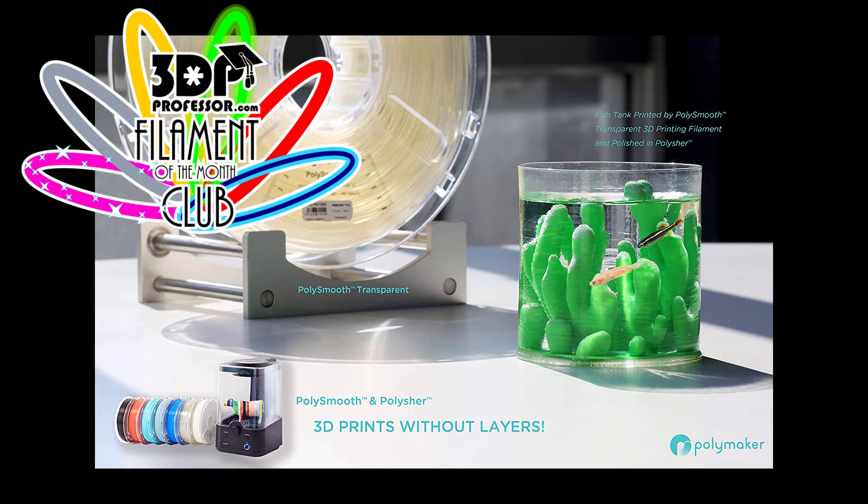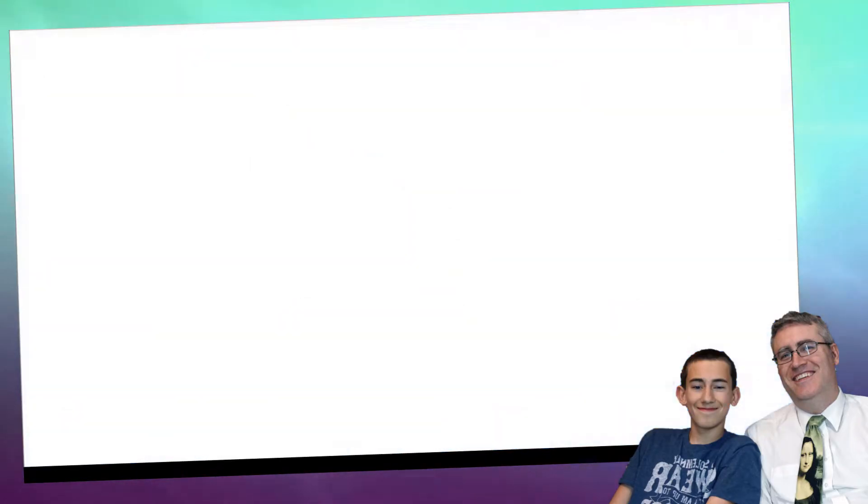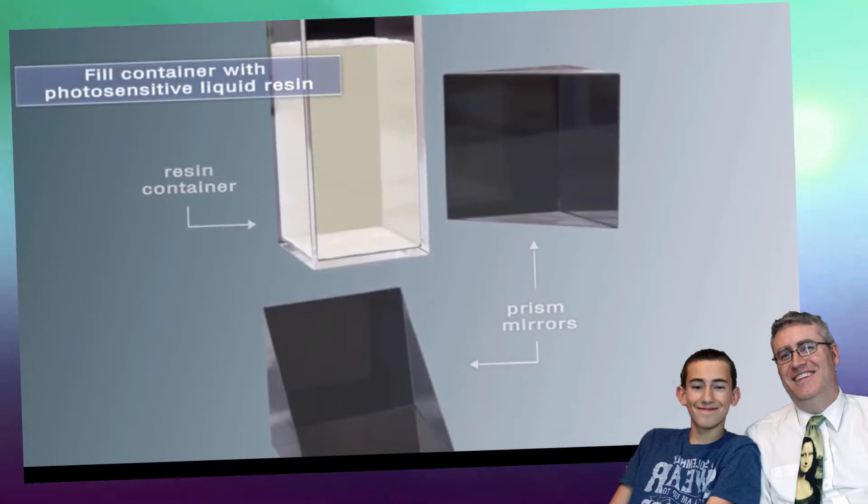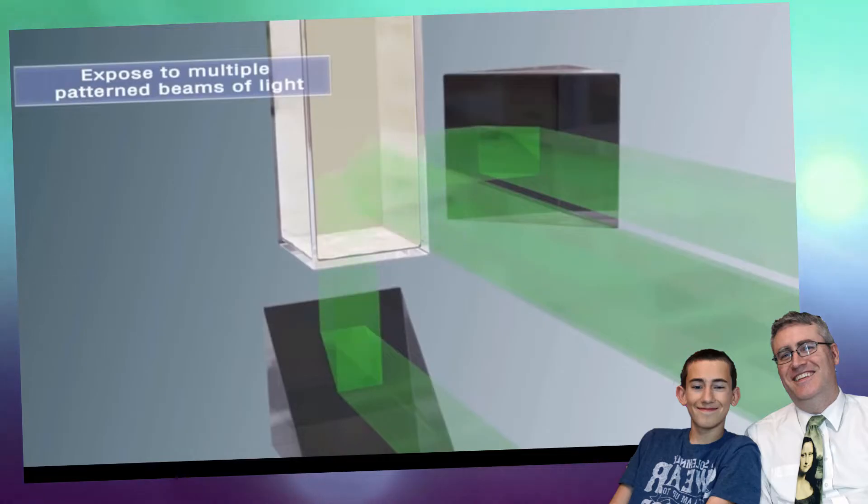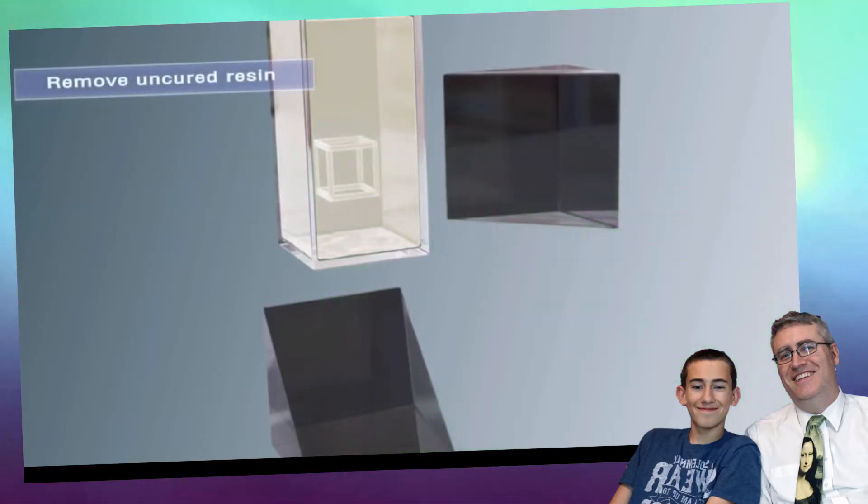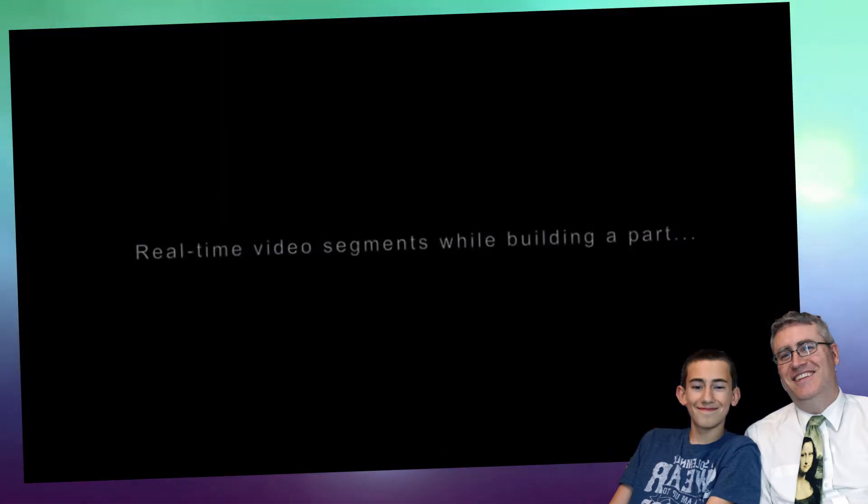This month, Filament of the Month Club members will be trying out Polymaker Polish Smooth Clear, the filament that prints like PLA but smooths with alcohol. All right, so the first printer is called 3D printing in a fraction of the time from Lawrence Livermore. So no sound on this one, but check it out. They hit the light from three different directions. Now here's the thing - that resin, the liquid that they're putting in there, hardens when it gets enough light, which is very cool.